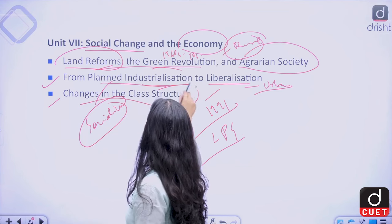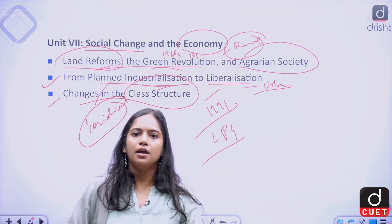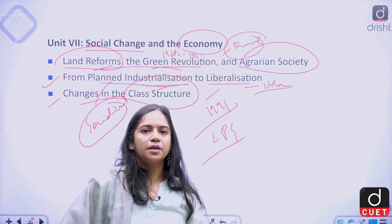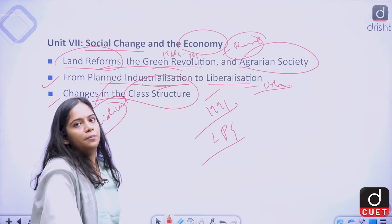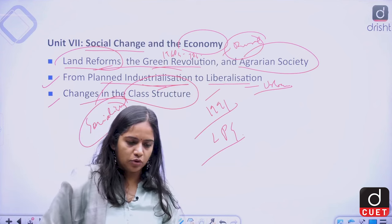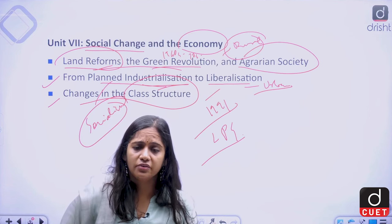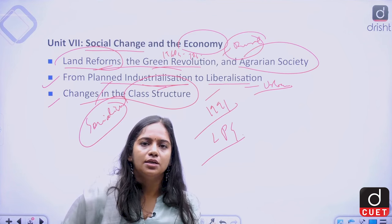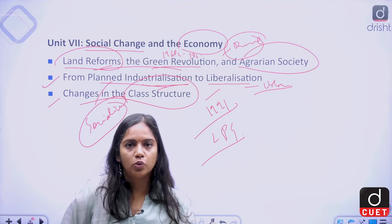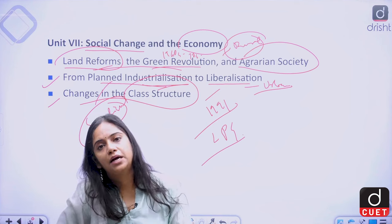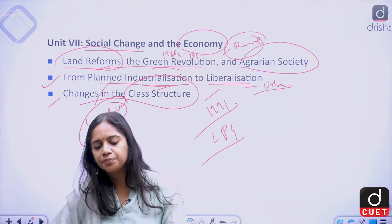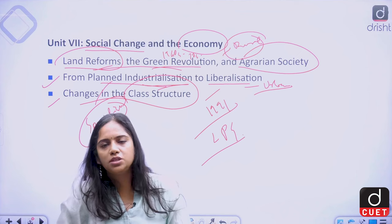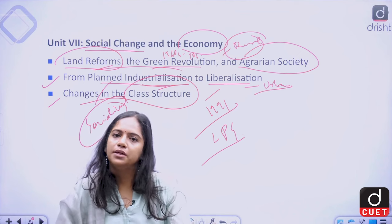In the last chapter of Unit 7, we would be discussing class structure. How Indian society, apart from the caste it was divided into, has now also been divided into class — and that has been because of the impact of economy on society. If you look around yourself, you will see people belonging to different classes: upper class, upper middle class, middle class, lower class, and the poor. How these classes have come about in Indian society, what are their complexities, how homogeneous are they, and what are their problems will be discussed.